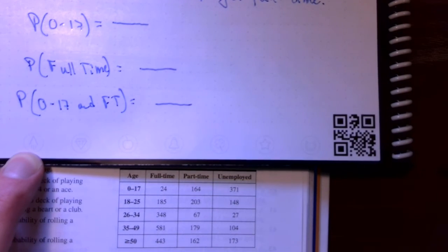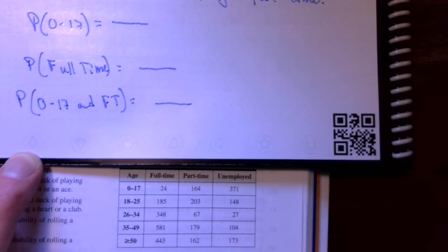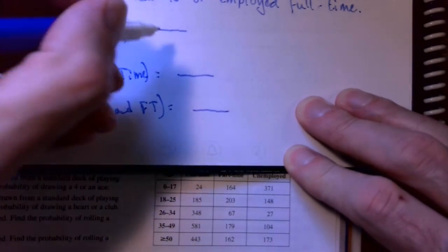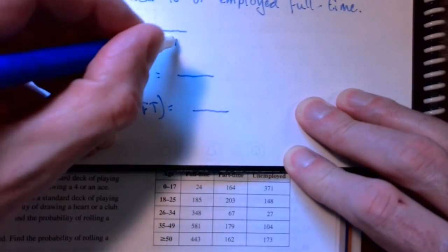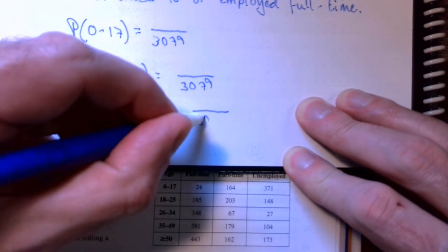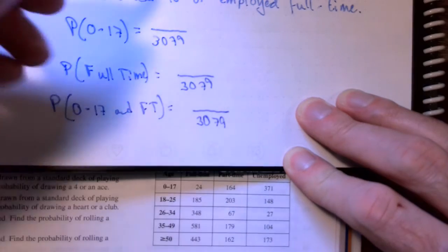To get my denominator, I need to add up every number in this table. In the previous example that we looked at in an earlier video, they were nice to us and they added everything up and gave us a grand total. Here, I'm going to have to do the work myself. So, I crunched the numbers. I added up every entry in this table and came up with 3,079. So, that's my denominator in all of these cases.